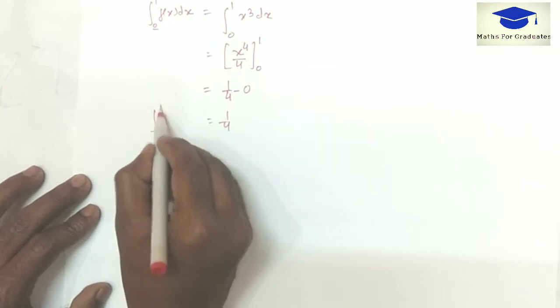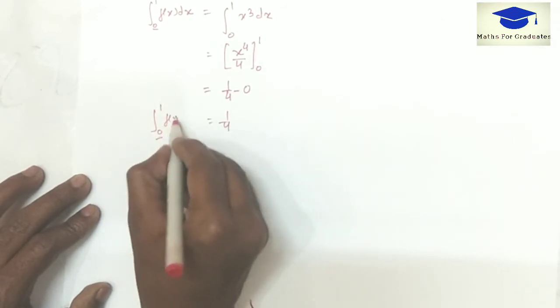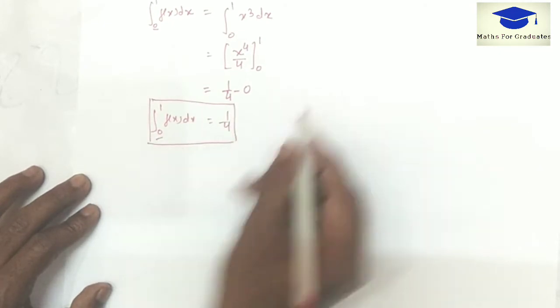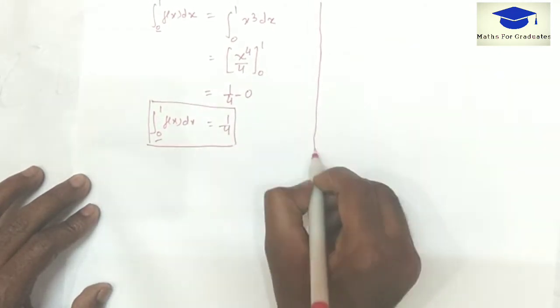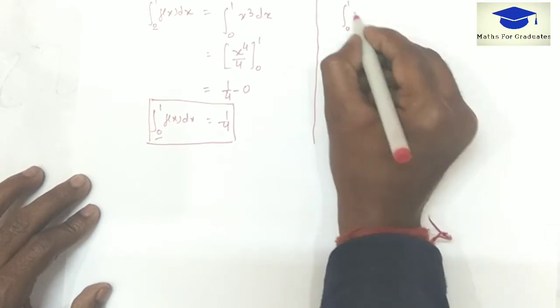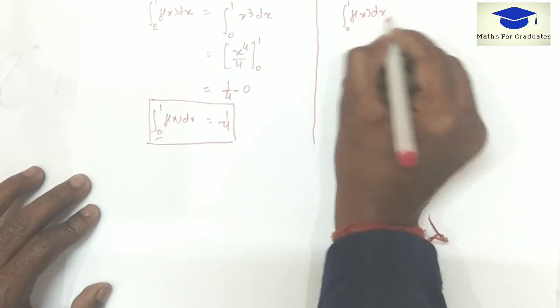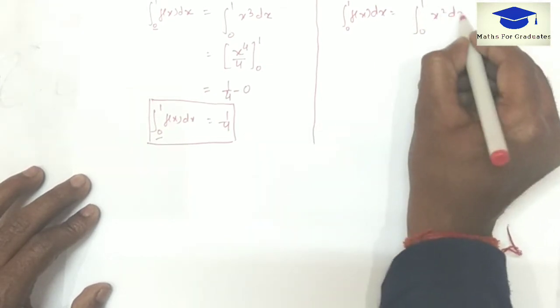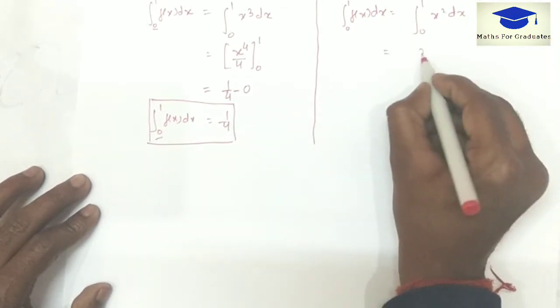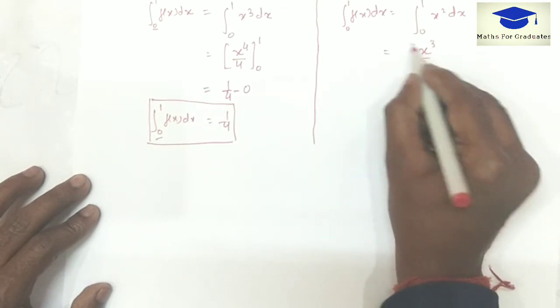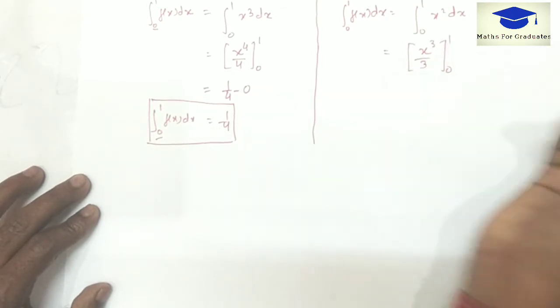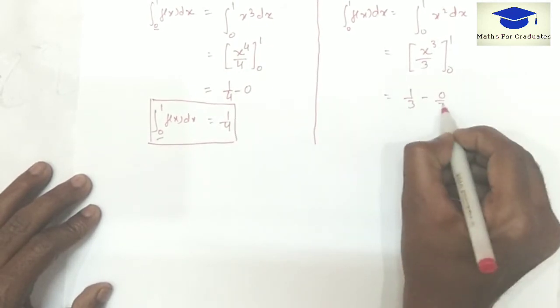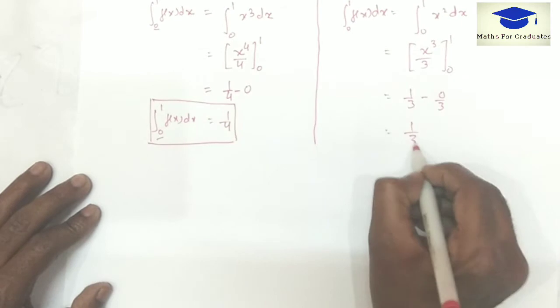Hence lower Riemann integral is 1 over 4. Similarly finding upper Riemann integral. For upper Riemann integral f(x) will be x squared. Now on integrating we will get, applying the limits, higher limit minus lower limit, and the result will be 1 over 3.